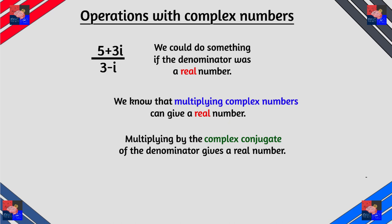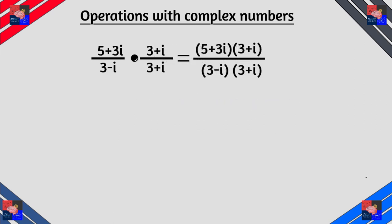So what complex conjugate? Of course the denominator's. So (3+i) over (3+i). Again this is equal to 1. So we're doing 2 multiplications. So we do what we did last time, just foil on both sides.